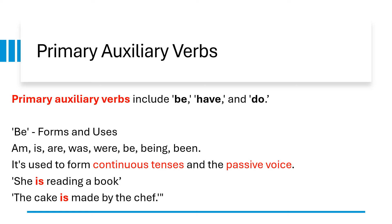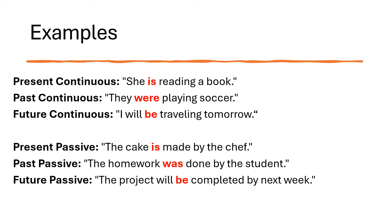For example, in the present continuous tense we say: she is reading a book. And in passive voice: the cake is made by the chef. Auxiliary verbs act as helping verbs to alter the tense, voice and mood of a sentence. How to make continuous tenses using be — present continuous: she is reading a book. Past continuous: they were playing soccer. Future continuous: I will be traveling tomorrow.